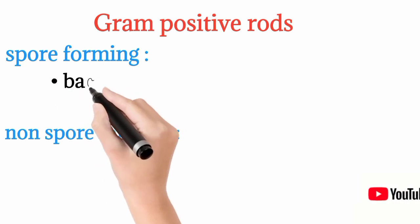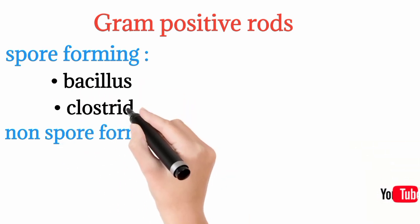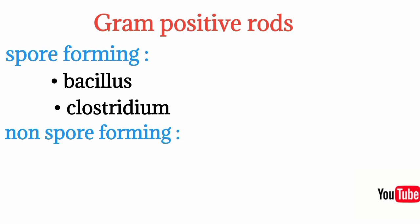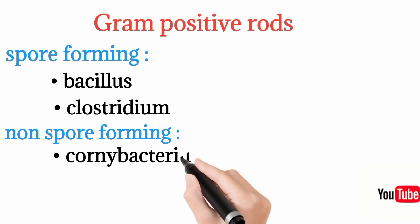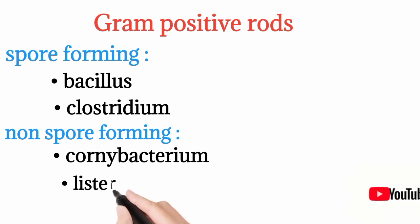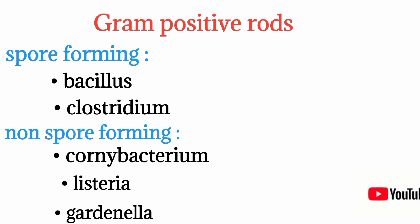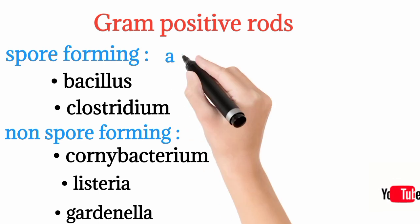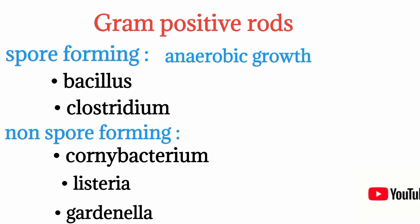Spore-forming gram positive rods include Bacillus and Clostridium species. Non-spore-forming gram positive rods include Corynebacterium, Listeria, and Gardnerella.